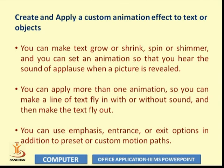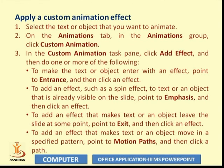To create custom animation effects on text or objects, you can make text grow or shrink, spin, or shimmer, or set an animation so that you hear applause when a picture is revealed — your PC's sound option must be on. You can apply more than one animation: make a line of text fly in with or without sound, then make it fly out. The options available in custom animation are Entrance, Emphasis, and Exit. On the Animations tab, in the Animations group, click Custom Animation, then in the task pane click 'Add Effect.'